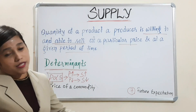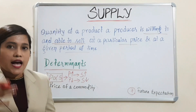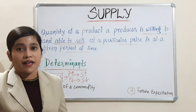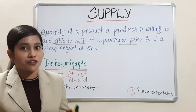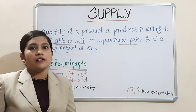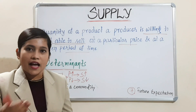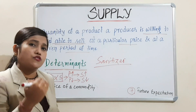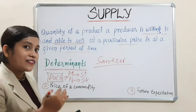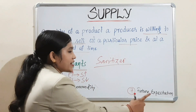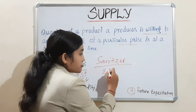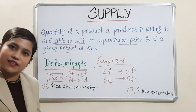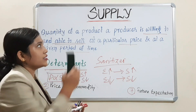Last one is future expectation. Suppose I am a producer and I think that my producing unit has demand in the near future. This is a pandemic situation of COVID-19. Suppose I am a producer of sanitizer. I have forecasted that in the near future, there will be extreme demand of sanitizer and mask. So I will increase the supply of my product. Why? Because future expectation is favorable. When expectation is favorable, our supply will increase. If expectation is not favorable, our supply will decrease.